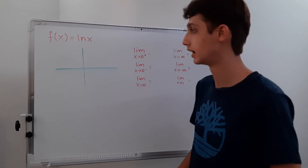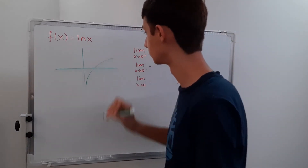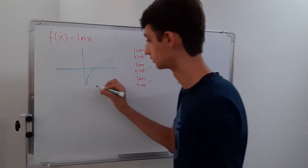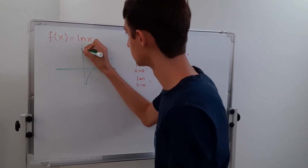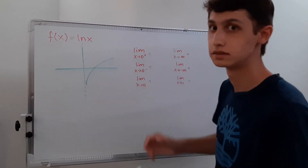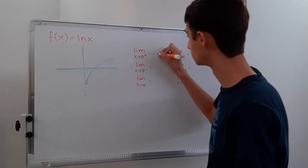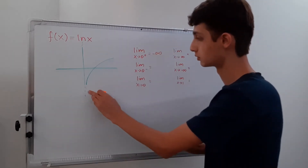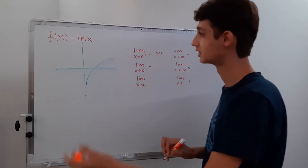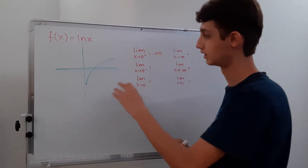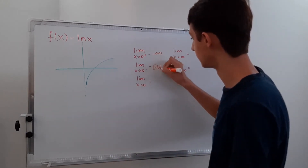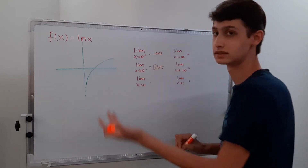Now the natural log of x just looks like this — it has an asymptote here, so I can draw a little boundary. Zero from the positive direction is going to be negative infinity, because as we approach zero from the positive direction, it's going down to negative infinity. Zero from the negative direction doesn't exist. And x approaches zero — since these two aren't the same, this doesn't exist either.